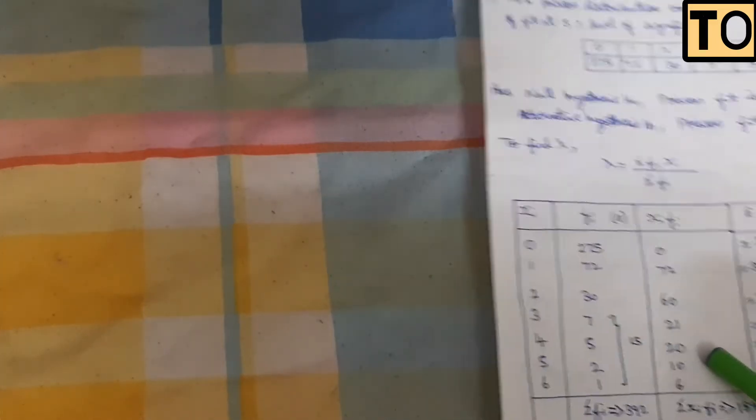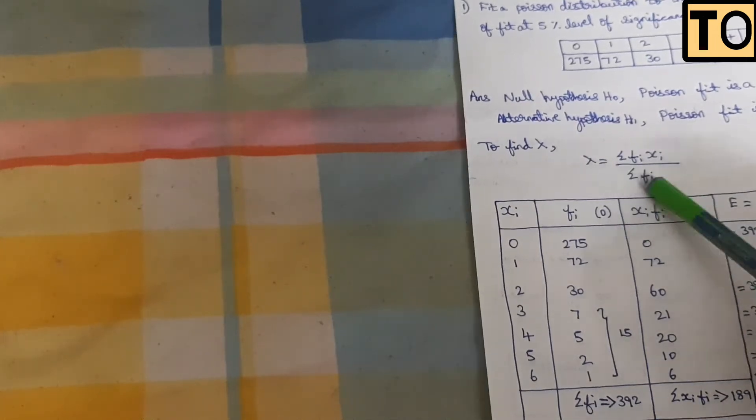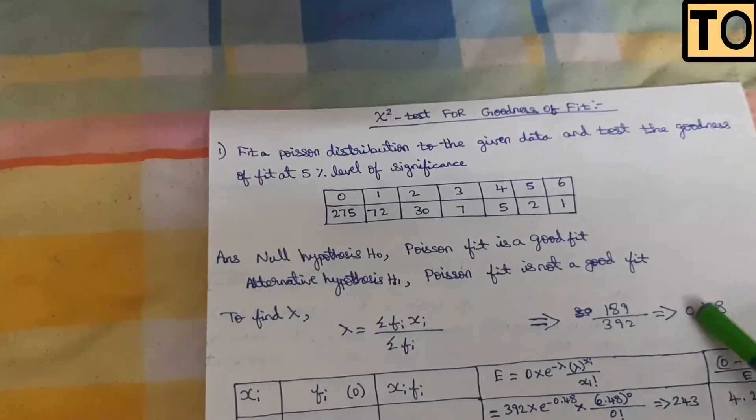Now multiply X-suffix-i and F-suffix-i together for each row. In the summation column of X-suffix-i times F-suffix-i, the total value is 189. So sigma F-suffix-i is 392 and sigma of F-suffix-i times X-suffix-i is 189.